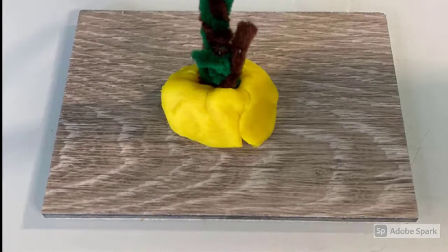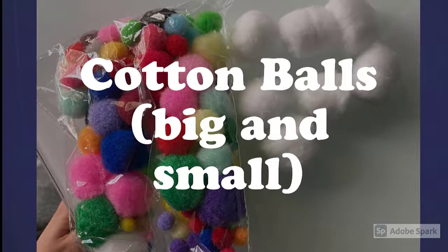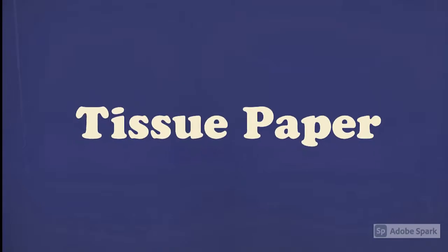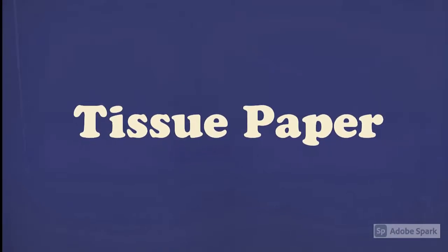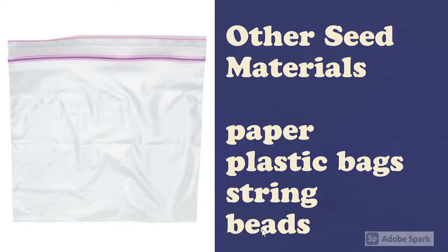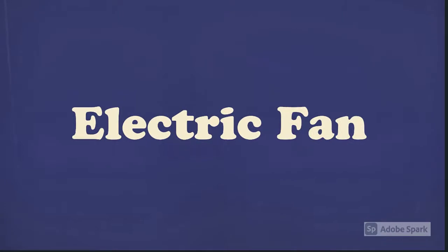We also have cotton balls, both big and small, just for some variety. We're also going to be using tissue paper to experiment as a type of seed. Be creative — what other seed materials can you use to test? Can you design seeds out of paper, cut-up plastic bags, string, or beads? Look around yourself and find things that you can use. You will also need an electric fan. You can get one that you need to assemble, or you can just use one that's already assembled.